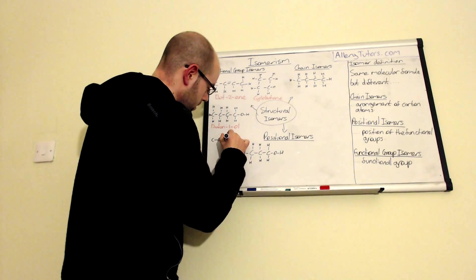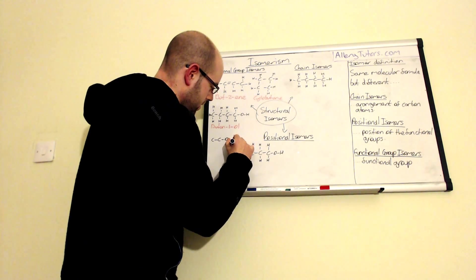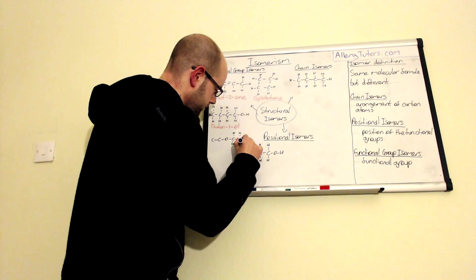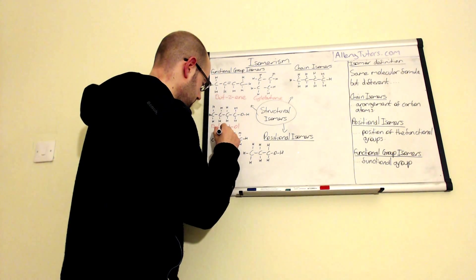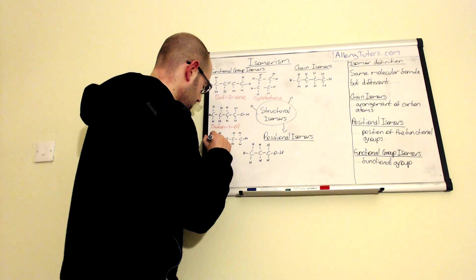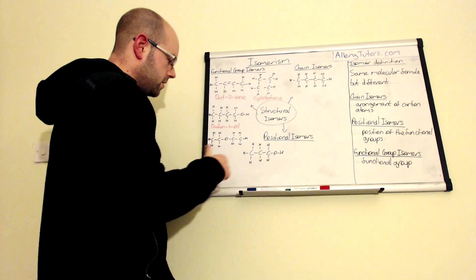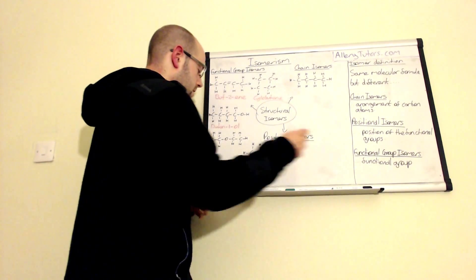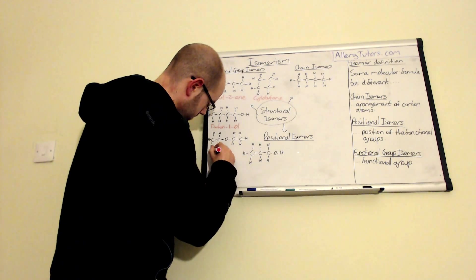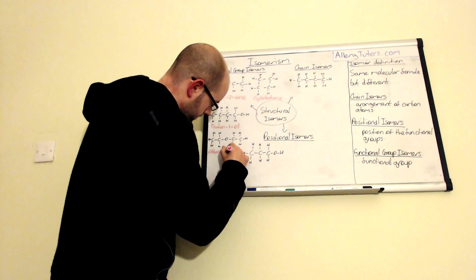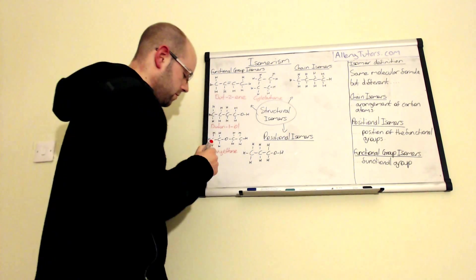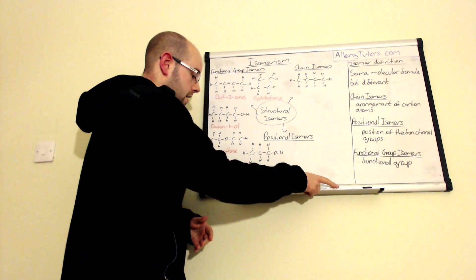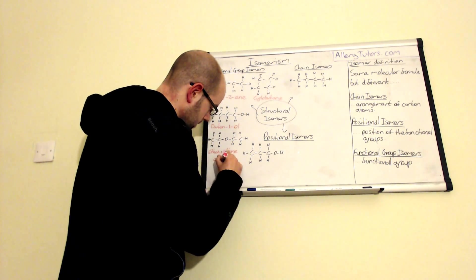An ether is where you have an oxygen sandwiched in between a set of carbons. You can see we have an oxygen in the middle and two ethyl groups either side. When naming this, we call it ethoxyethane — two ethyl groups either side of the oxygen in the middle. That is effectively an ether.